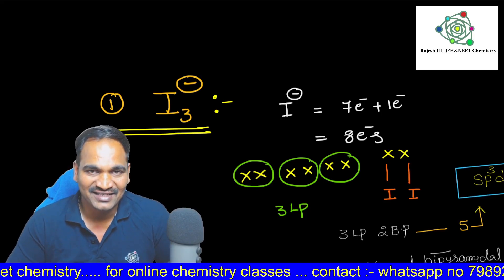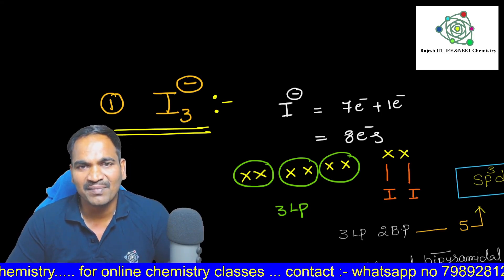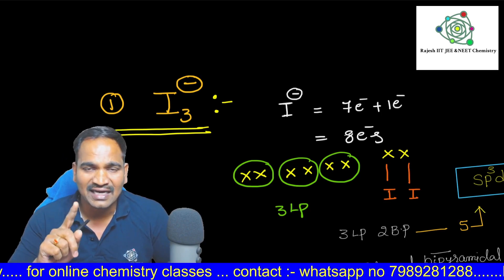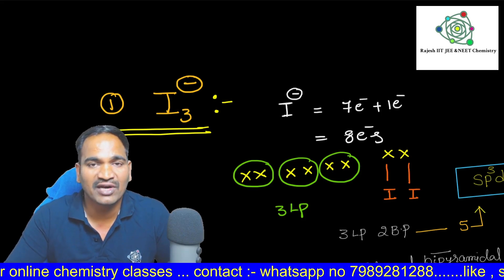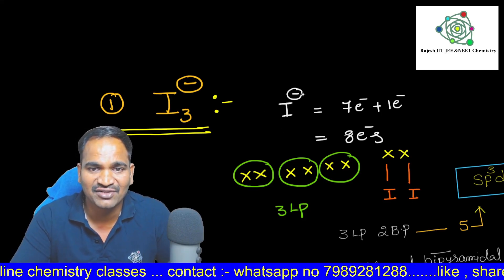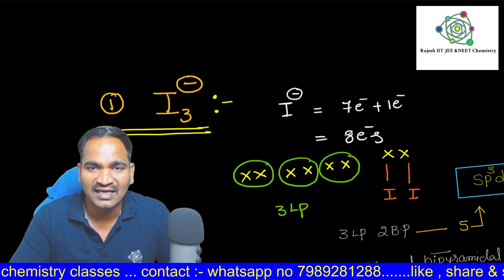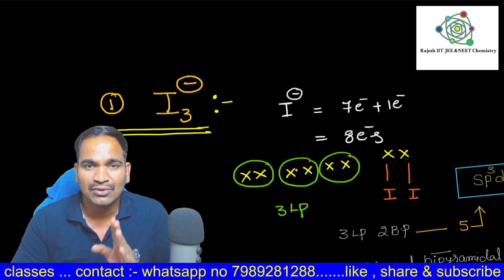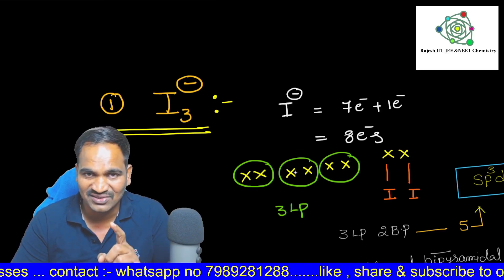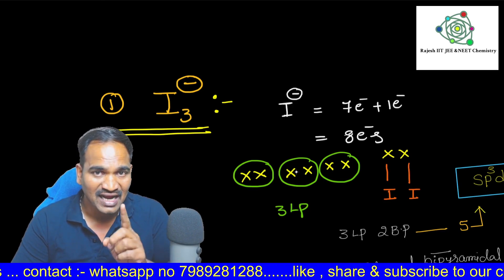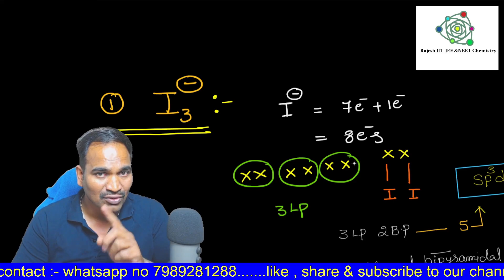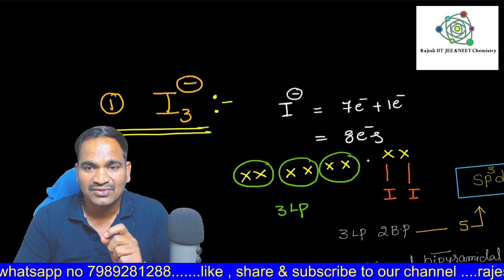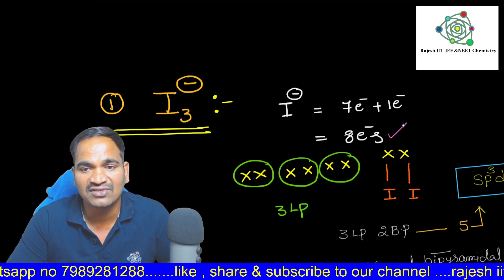Now first I am taking I3 minus. I3 minus has three iodines with the central atom also iodine. The central atom I has a negative charge. Iodine contains seven electrons in the valency shell. Since it's I minus, we need to add one more electron to this iodine. Therefore total number of electrons is eight.